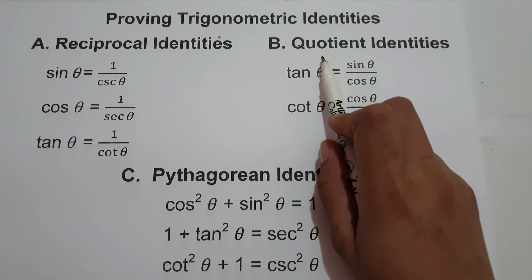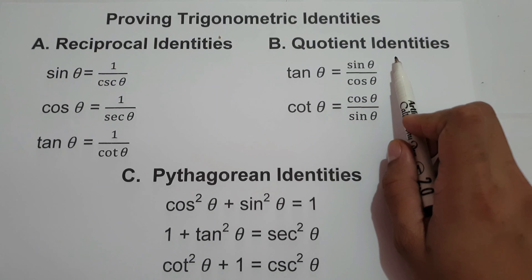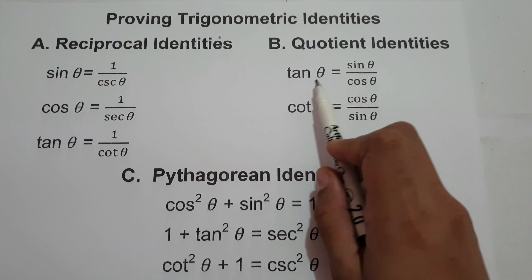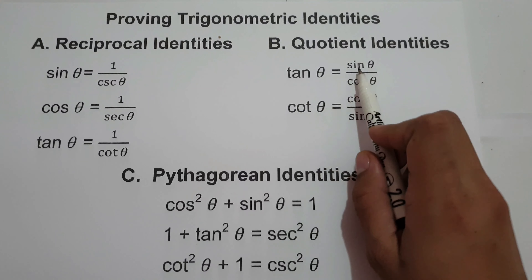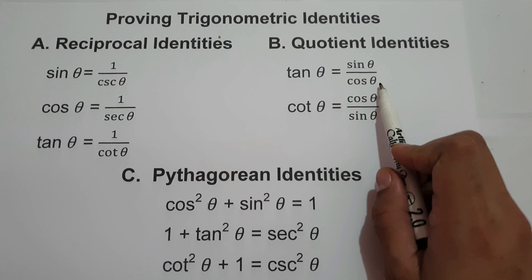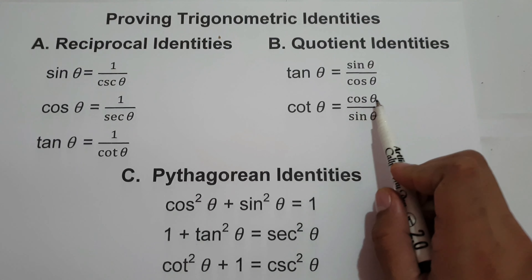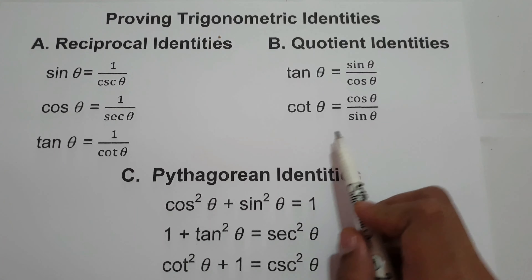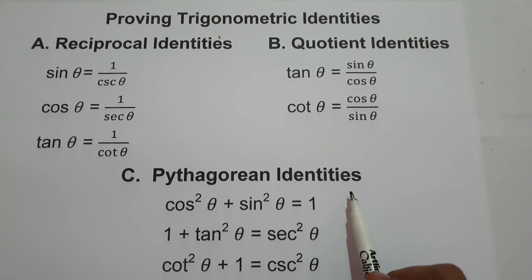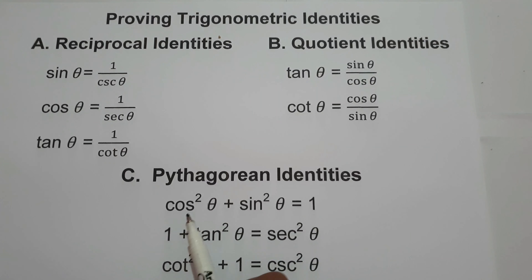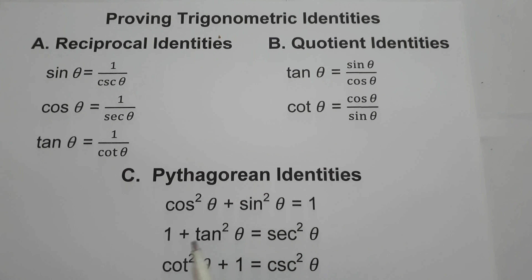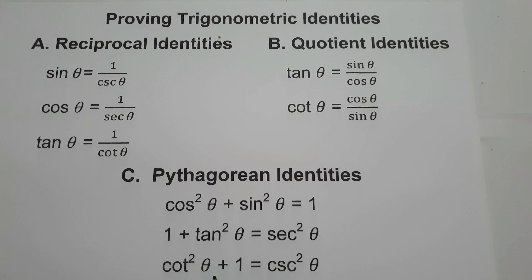The second one is the quotient identities. In quotient identities, we have tan theta is equal to sin theta over cos theta, cotangent theta is equal to cos theta over sin theta. And in Pythagorean identities, we have cos squared theta plus sin squared theta is equal to 1, and 1 plus tangent squared theta is equal to secant squared theta, and cotangent squared theta plus 1 is equal to cosecant squared theta.